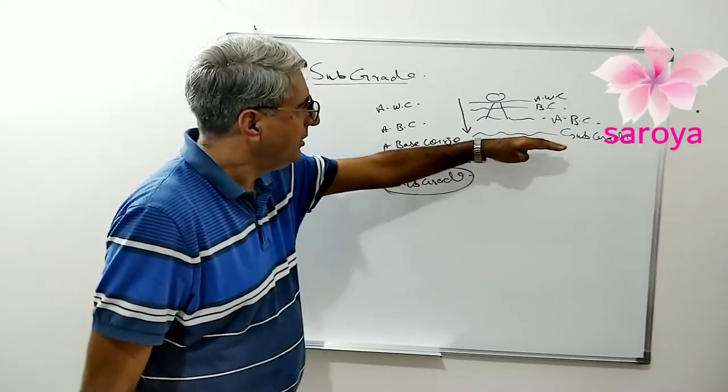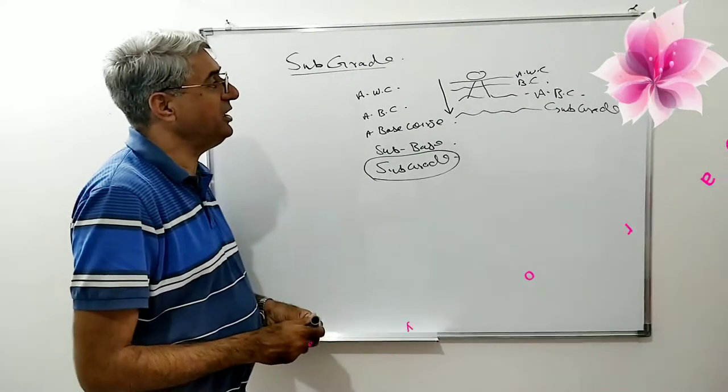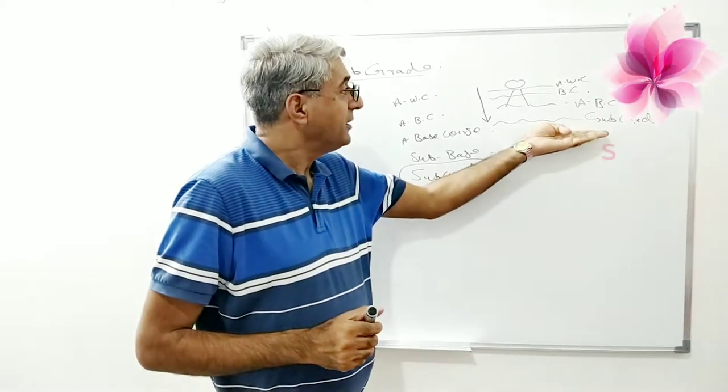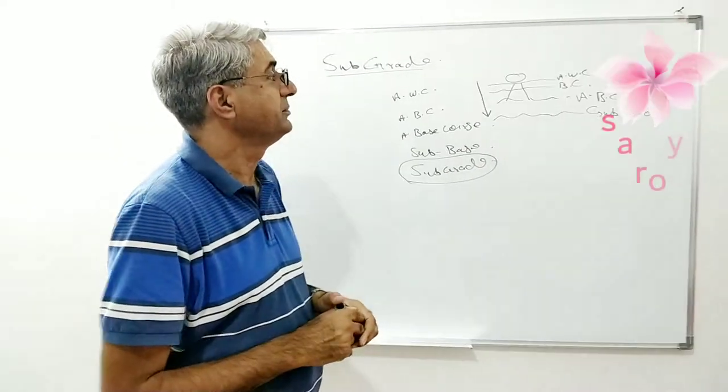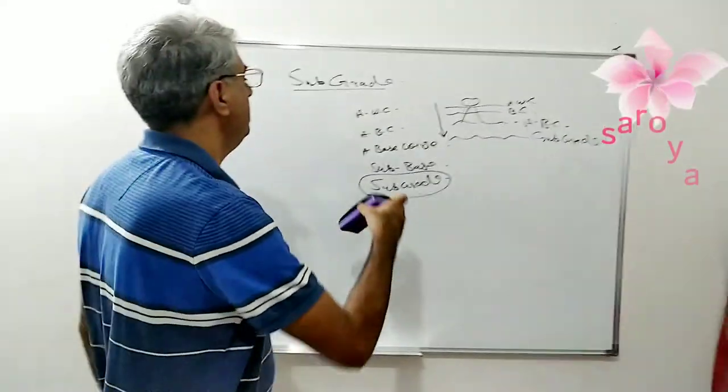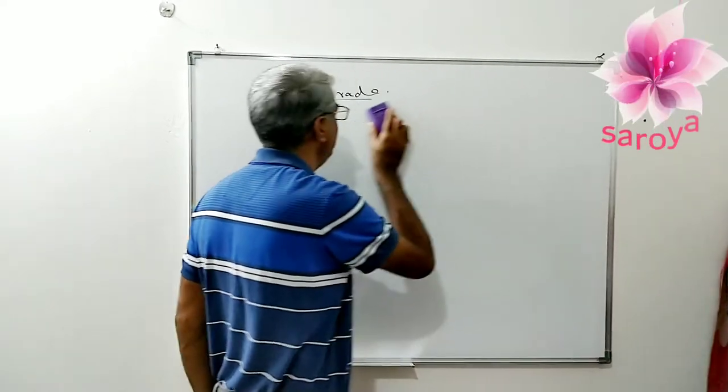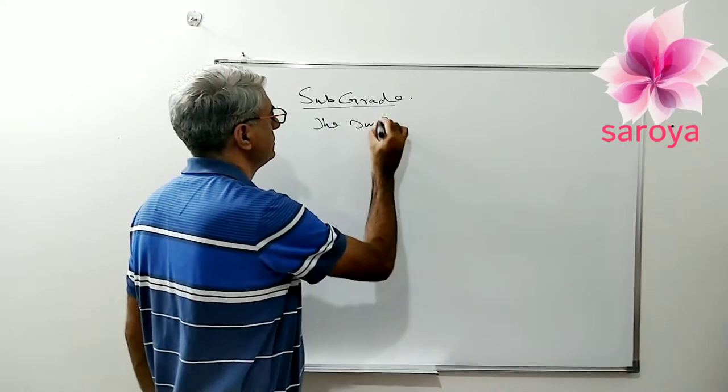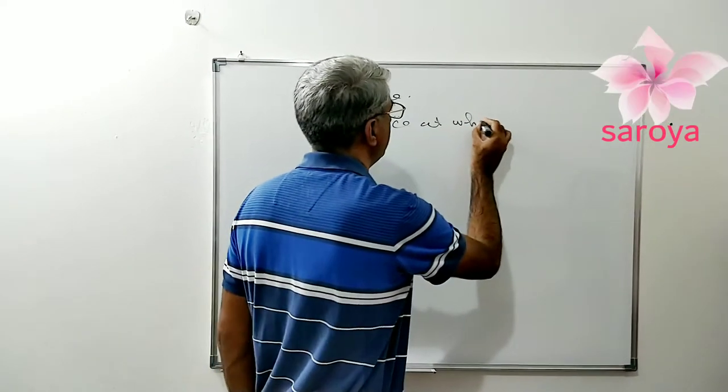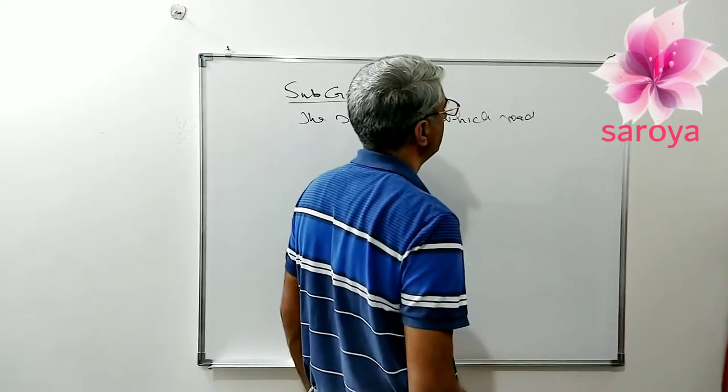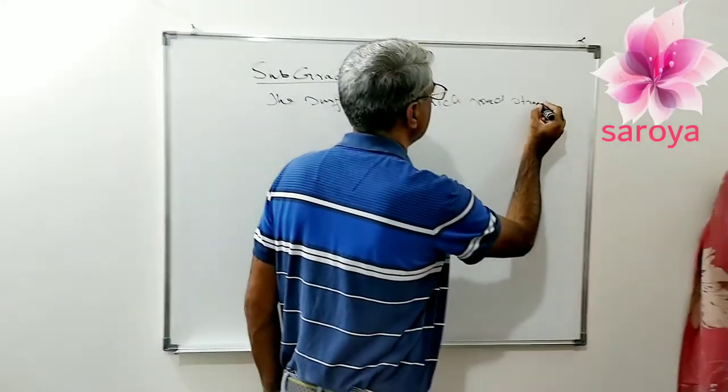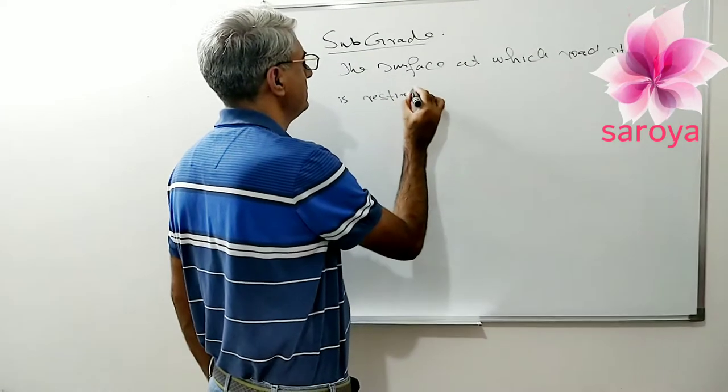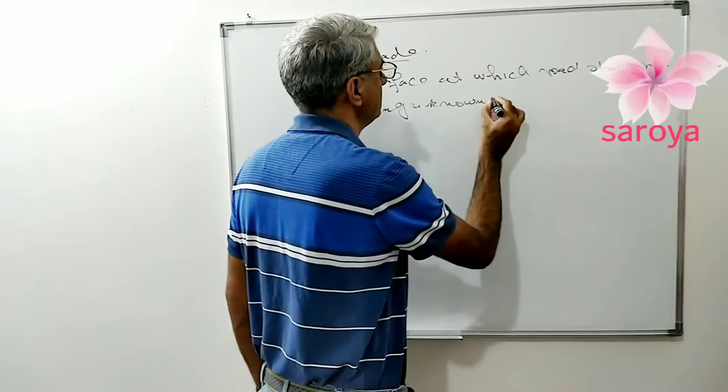This subgrade material is just earth, it is just soil, but this soil should also have some characteristics. So let me write down first: the surface at which road structure is resting is known as subgrade.